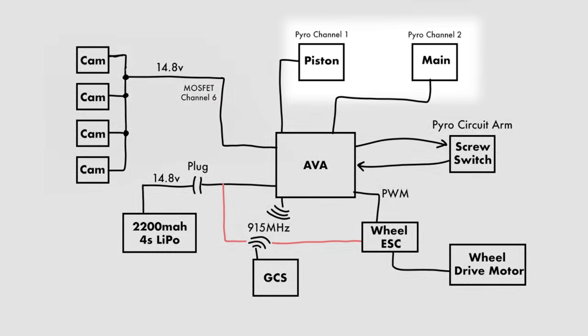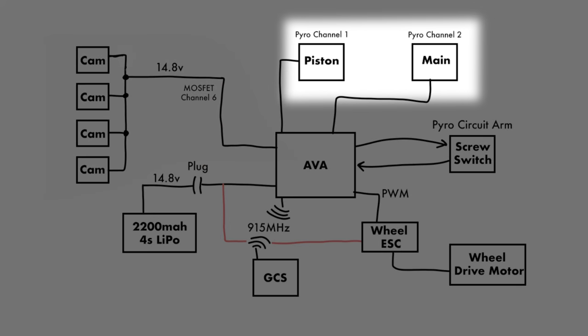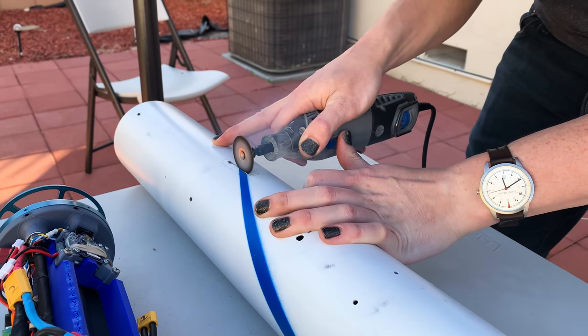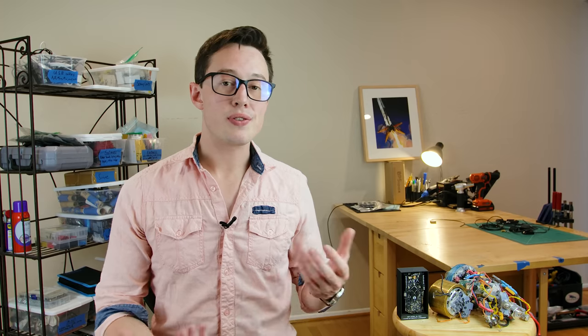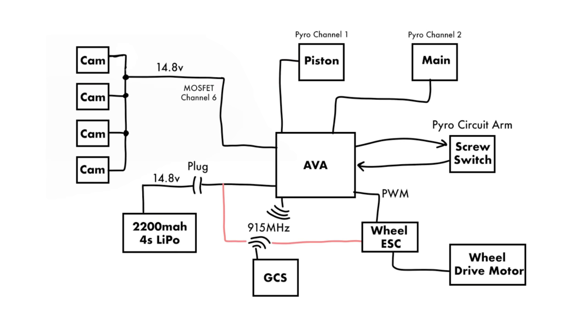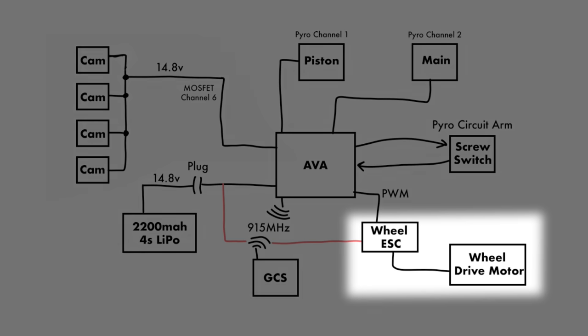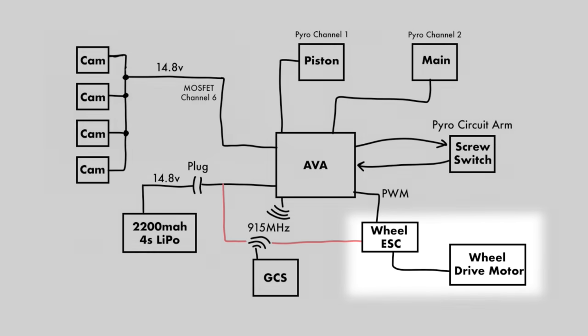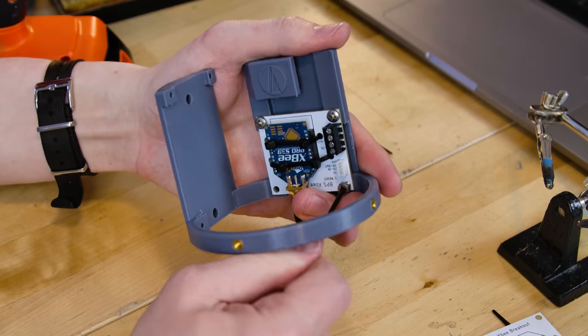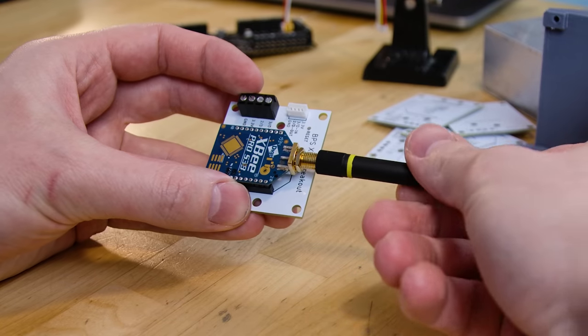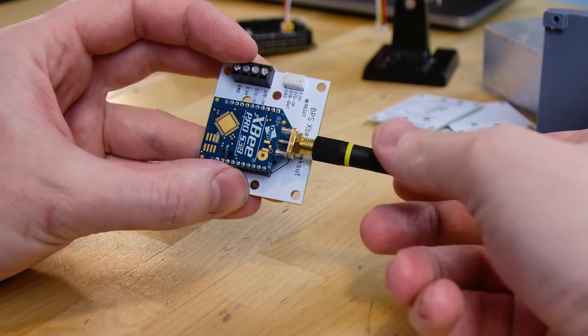Ava can then control the same things as Telemetrum, which is the two pyrochannels for the Drogue and main parachute. Ava is powered on using the power hatch that I mentioned in the airframe assembly video, but we arm the computer electrically using a screw switch through the wall. Ava also uses one of the PWM outputs to drive a speed controller for the reaction wheel motor, and the ESC also has a separate power line which goes directly to the lithium polymer battery so that we don't have to route crazy amounts of amperage through Ava, through the PCB itself. Ava broadcast telemetry using an external XB radio over 915 megahertz, and to close it out, we power the whole thing using a 2200 milliamp hour 4S LiPo.